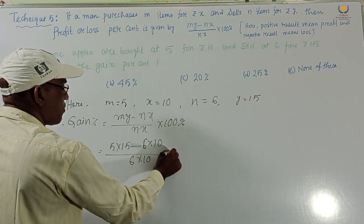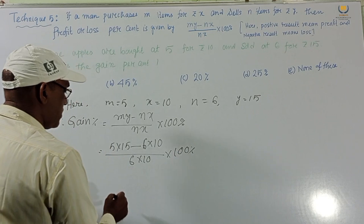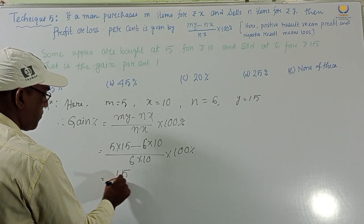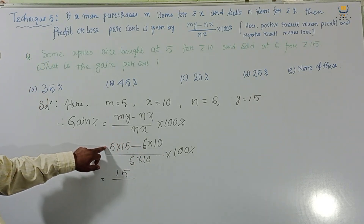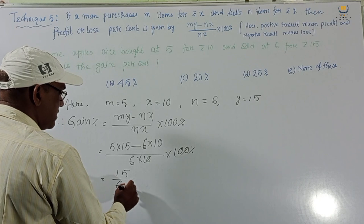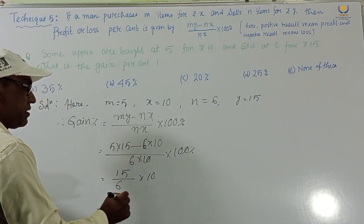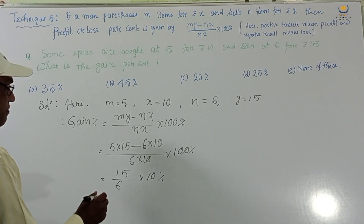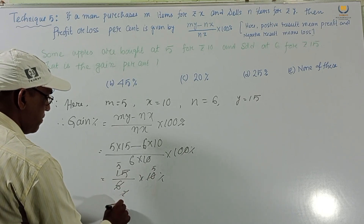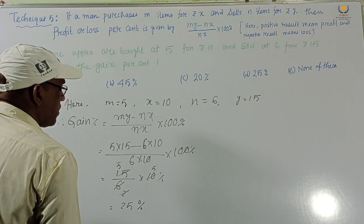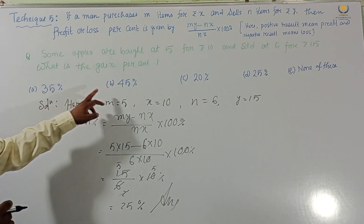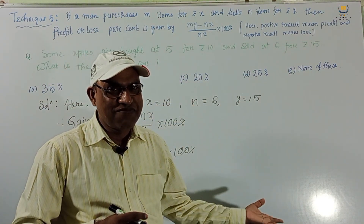Substituting: (5×15 minus 6×10) by (6×10) into 100 percent. That gives (75 minus 60) by 60 into 100 percent, which is 15 by 60 into 100. Cancelling, we get 15 by 6 into 10, then simplifying by 3 gives 5 by 2, which equals 25 percent. Answer is 25 percent, option D. Very easy solution!